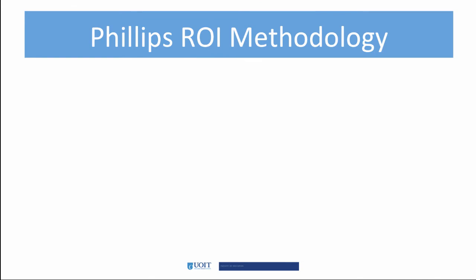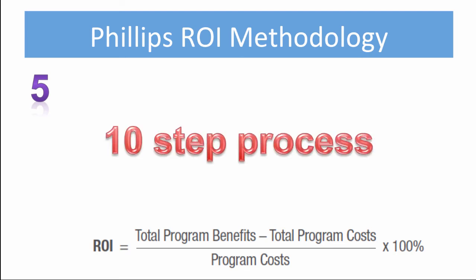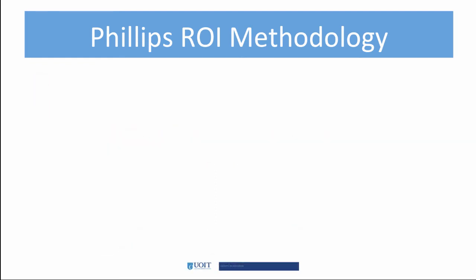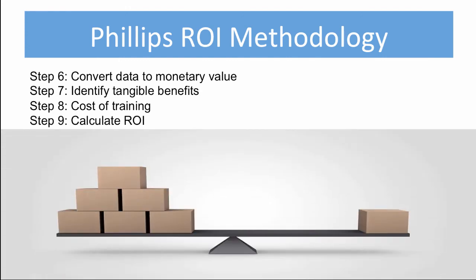Phillips' ROI methodology is similar to the Kirkpatrick model, but while Kirkpatrick includes ROI in the results level, Jack Phillips believed ROI should be its own level — the fifth level. As we discovered in the previous video, ROI compares program benefits to costs and answers the question: will we make money? The methodology goes beyond Kirkpatrick's model with a comprehensive 10-step process. Steps 6 through 9 are most important: Step 6 converts data collected to a monetary value, Step 7 indicates intangible benefits such as increased morale, Step 8 captures the cost of the training solution, and Step 9 calculates the ROI by comparing costs to benefits converted to a monetary value.